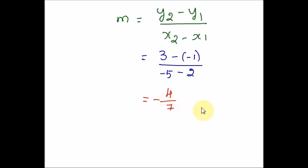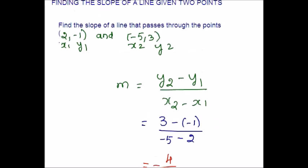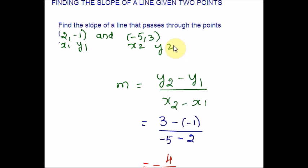It does not matter which point is called x1, y1 or x2, y2. Even if you swap them, you will get the same slope, as long as we are consistent with the order of the y terms and the x terms in the numerator and denominator — the calculation will yield the same result. Please remember that the first number in a coordinate pair always denotes x, and the second number is the y coordinate. Now let me take one more example and explain how to identify the slope and y-intercept of a line given an equation.